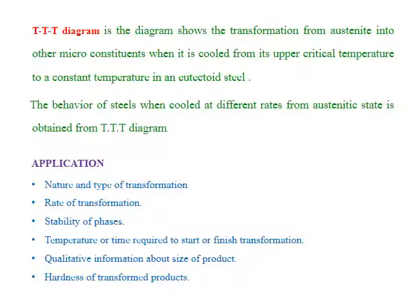As an introduction, the TTT diagram shows the transformation from austenite into other microstructures or micro-constituents when it is cooled from its upper critical temperature to a constant temperature in a eutectoid steel. The eutectoid steel is an iron-carbon alloy with a fixed carbon composition of 0.8%. We may take the alloy system to a higher temperature and cool it to lower temperature levels, observing different microstructural changes.